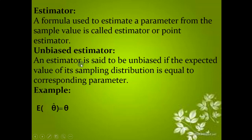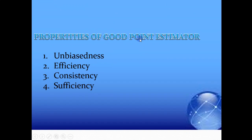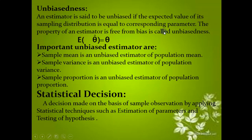An Unbiased Estimator is an estimator that is said to be unbiased if the expected value of the sample distribution is equal to the corresponding parameter. For example, E(theta-hat) = theta, where theta is the corresponding parameter.